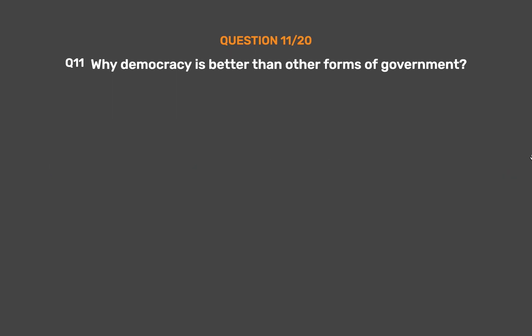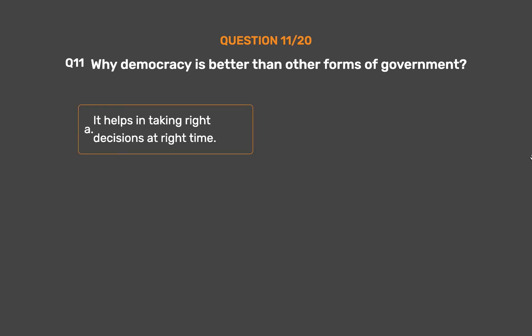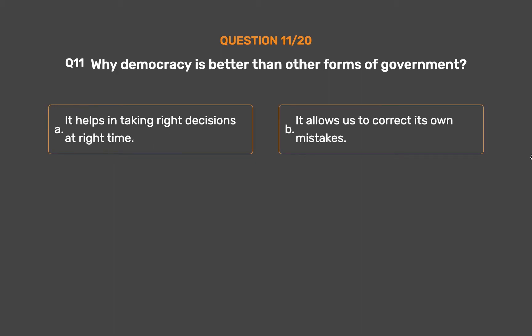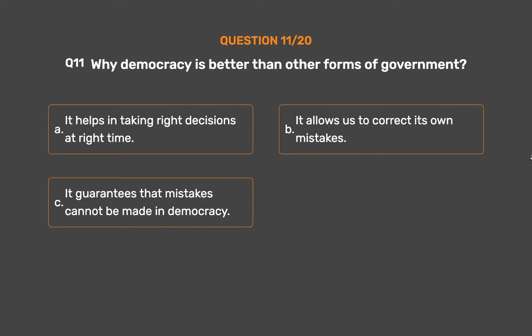Question number 11. Why is democracy better than other forms of government? Option A: It helps in taking right decisions at the right time. Option B: It allows us to correct its own mistakes. Option C: It guarantees that mistakes cannot be made in democracy. Option D: None of the above.